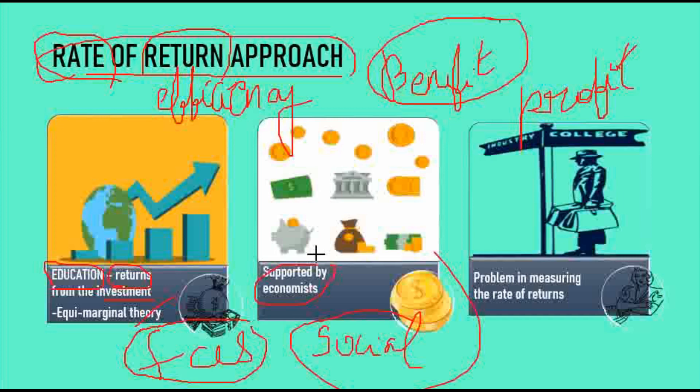This is about the rate of return approach. The rate of return approach is very economically supported — economists support this approach very much. But there is also a major disadvantage: you cannot calculate the amount of returns. That is the major disadvantage. When a student or a child can succeed, we can't tell.